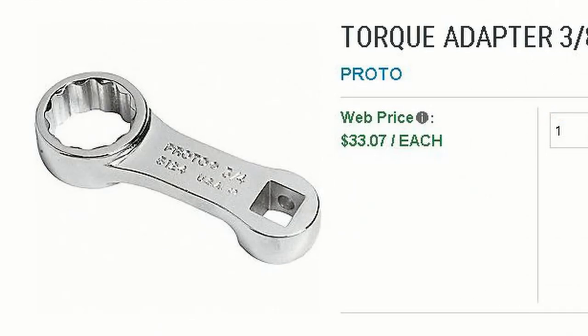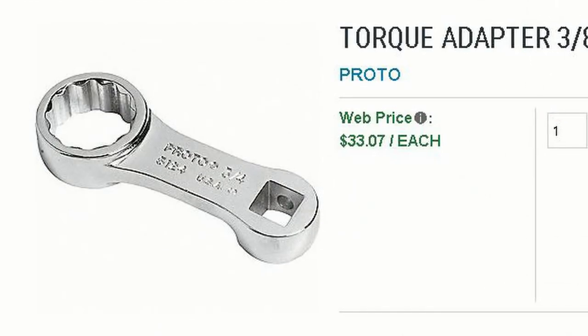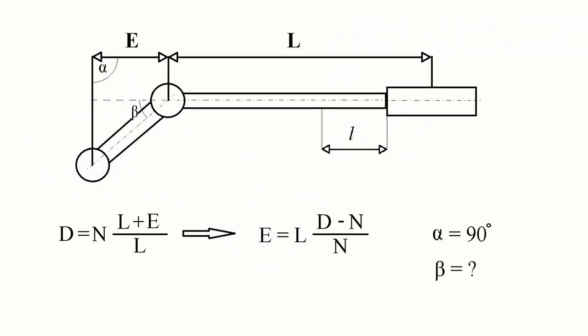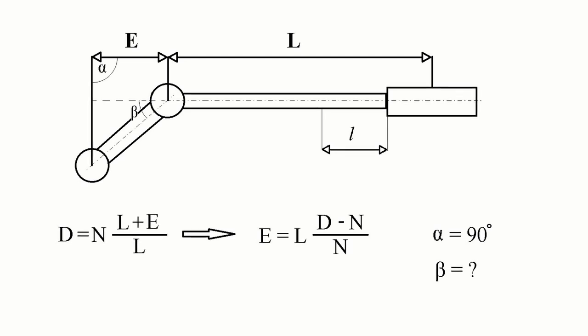But what about the case of fixed length extension? Easy. As we saw in our experiment for our calculations, we need only the length E, the distance between the center of the torque wrench head and the axis of the nut rotation measured along the axis of the torque wrench.